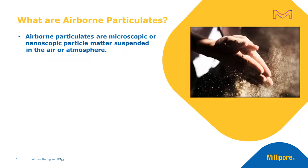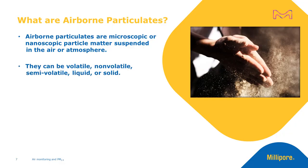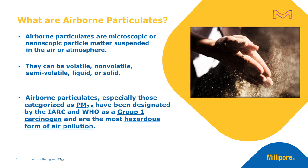What, then, are airborne particulates? Airborne particulates are microscopic or nanoscopic particle matter suspended in the air or atmosphere. These can be either volatile, non-volatile, semi-volatile, liquid, or solid. Airborne particulates, especially those categorized as PM2.5, are broadly designated by the IARC and WHO as a Group 1 carcinogen and are effectively the most hazardous form of air pollution.